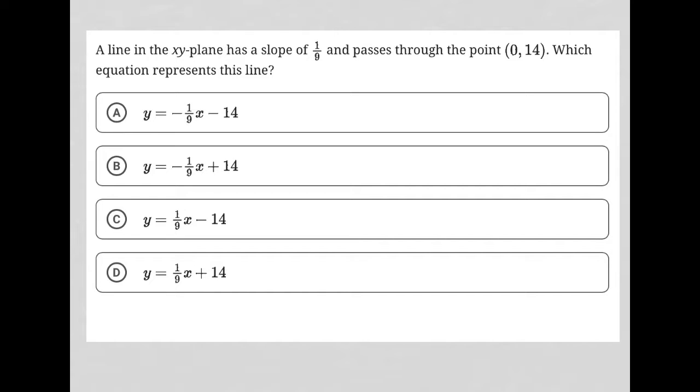So this question says a line in the xy plane has a slope of 1/9th. It's a line, so I'm always thinking y=mx+b as my equation for a line.